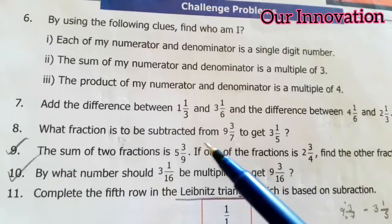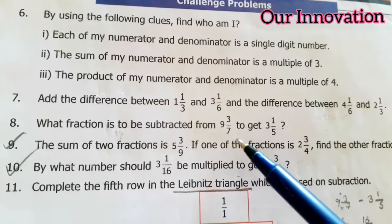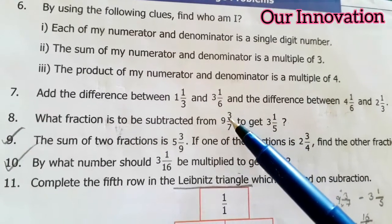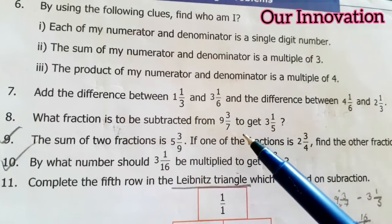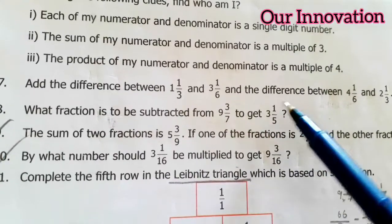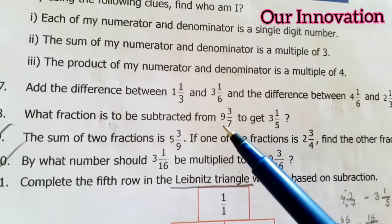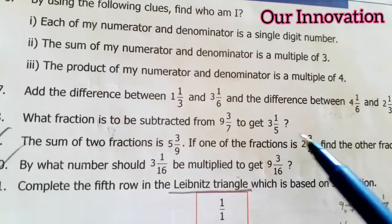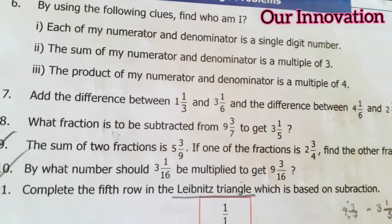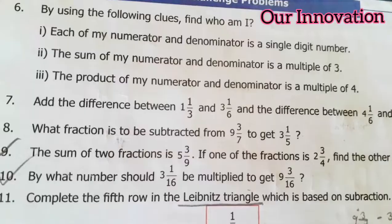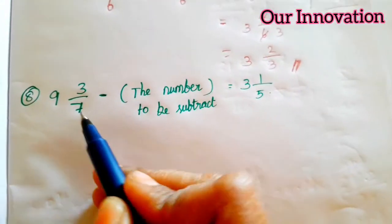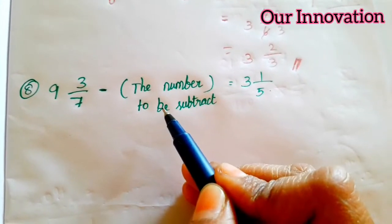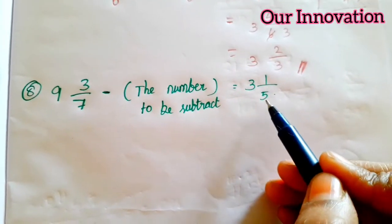What fraction is to be subtracted from 9 and 3 by 7 to get 3 and 1 by 5? So you guys, this fraction — any fraction you subtract — this answer comes. So you guys, if you subtract, the answer you get: you need to find what to subtract. So students, look here: 9 and 3 by 7, the number to be subtracted is equal to 3 and 1 by 5.